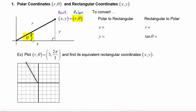Theta is an angle in standard position, as it has been all semester. When using polar coordinates, you turn through an angle of theta and then walk a distance of r, and you end up at that same point.